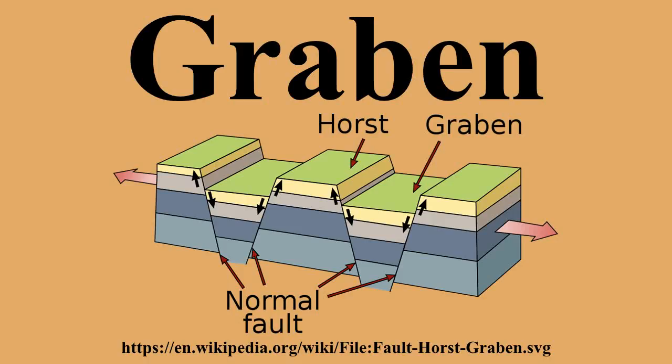Horsts are parallel blocks that remain between Graben. The bounding faults of a Horst typically dip away from the center line of the Horst. Single or multiple Graben can produce a rift valley.